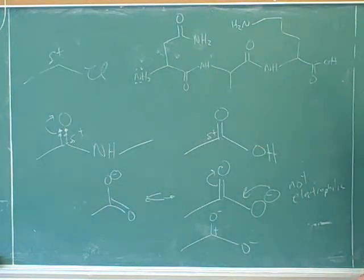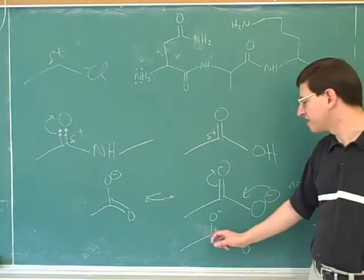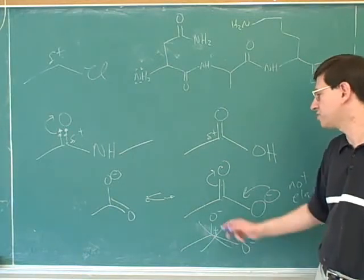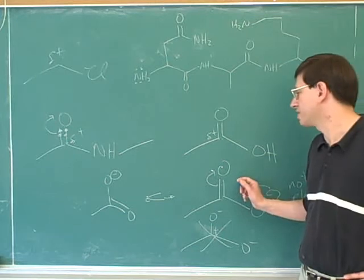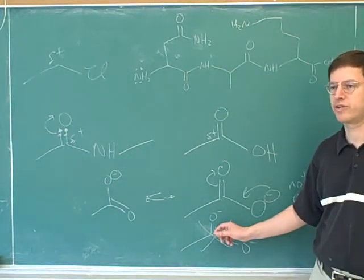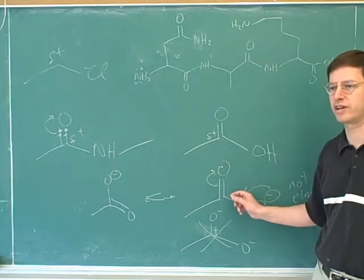These are the two main resonance structures over here. So now there really is not any important resonance structure where there's a positive charge on the carbon. This is not a very significant resonance structure anymore because it has too many charges. Notice this structure has one charge. This structure has one charge. But this structure has three charges.